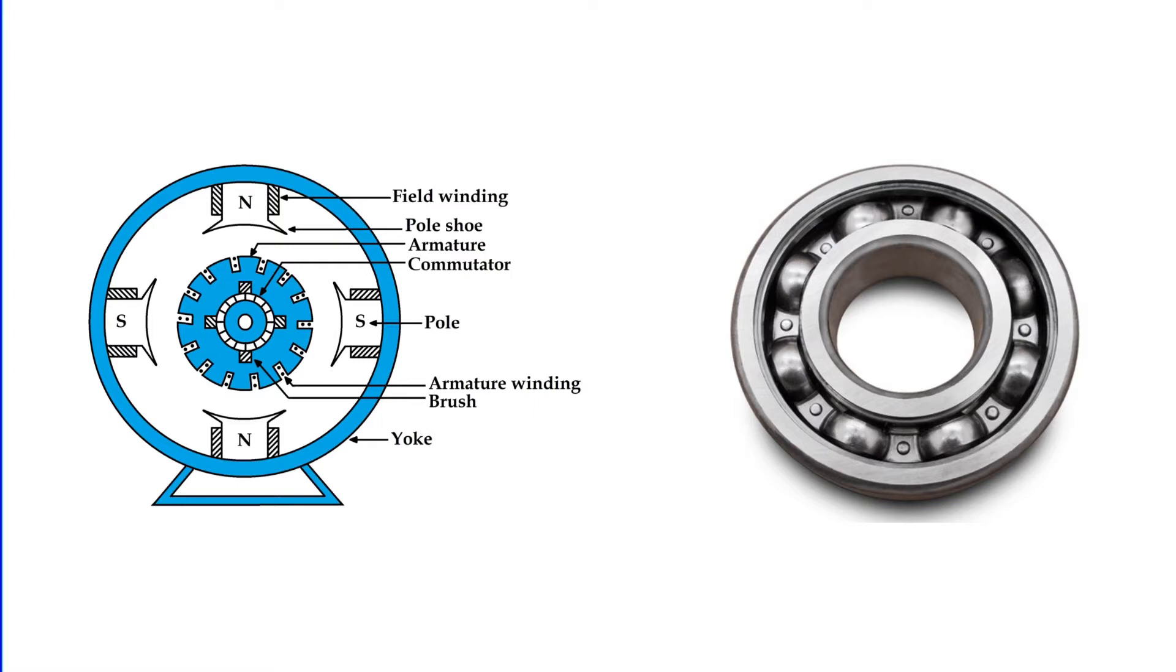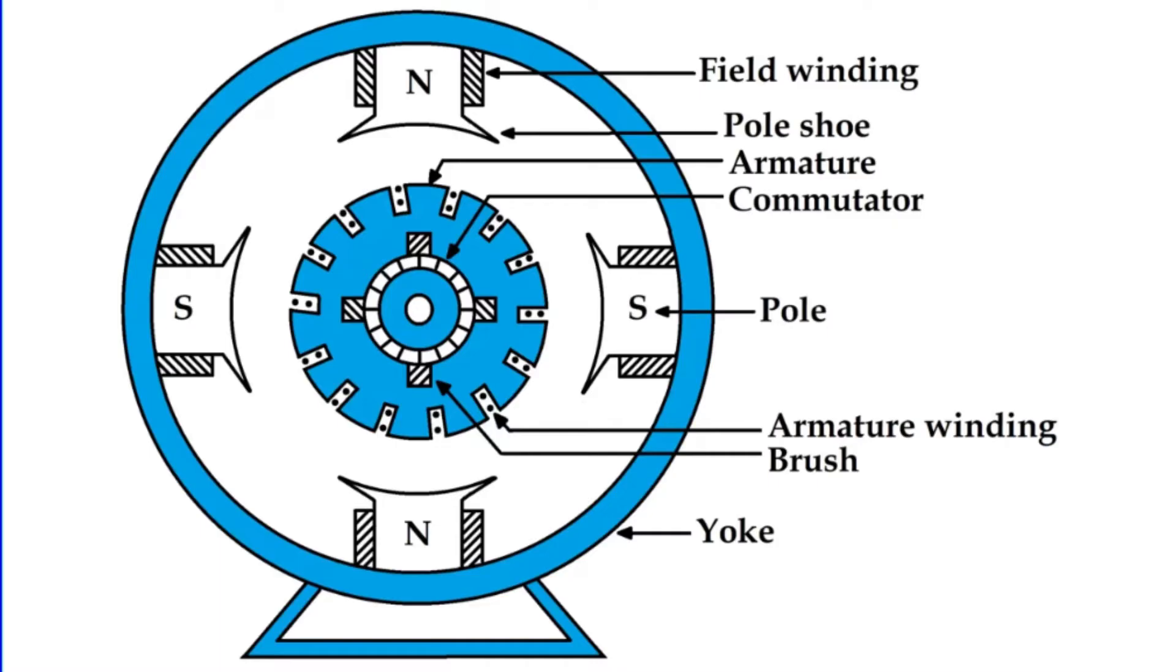Understanding these components is essential for grasping how a DC generator functions, setting the stage for exploring its operation and applications in detail. Now that we've examined the core components of a DC generator, let's explore how these parts work together to produce electricity.